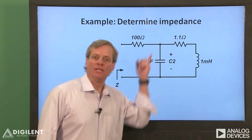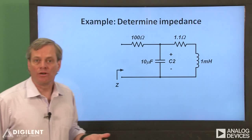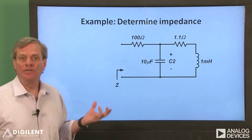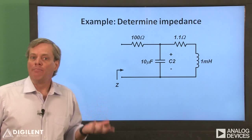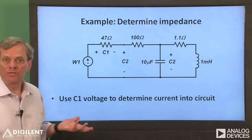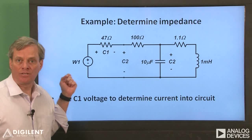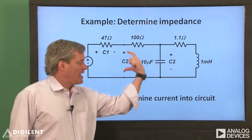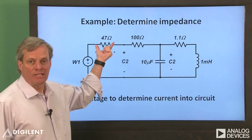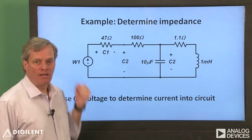As an example, let's measure the impedance of this circuit. We can easily measure a sinusoidal voltage applied across these terminals using our oscilloscope, but the current into the circuit requires a little more work. To measure the current, let's add a known resistor to the circuit and measure the voltage across that resistor, then use Ohm's law to determine the current through the resistor. The resulting circuit will look like this. We'll use channel 1 of the arbitrary waveform generator to apply a voltage across the overall circuit.